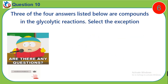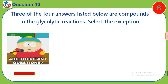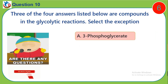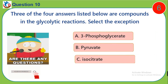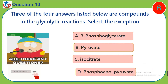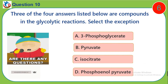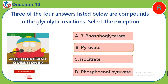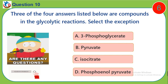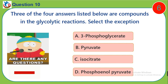Question 10. Three of the four answers listed below are compounds in the glycolytic reactions. Select the exception. A, theriphosphoglyceride. B, pyruvate. C, isocitrate. D, phosphoenolpyruvate.